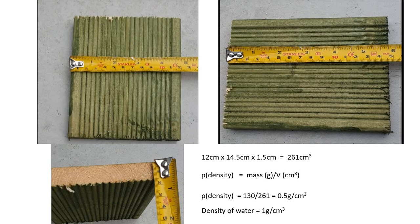So the density is given by the mass divided by the volume, which gives us 0.5 grams per cubic centimeter. The density of water is known to be one gram per cubic centimeter. So the wood is less dense than the water.